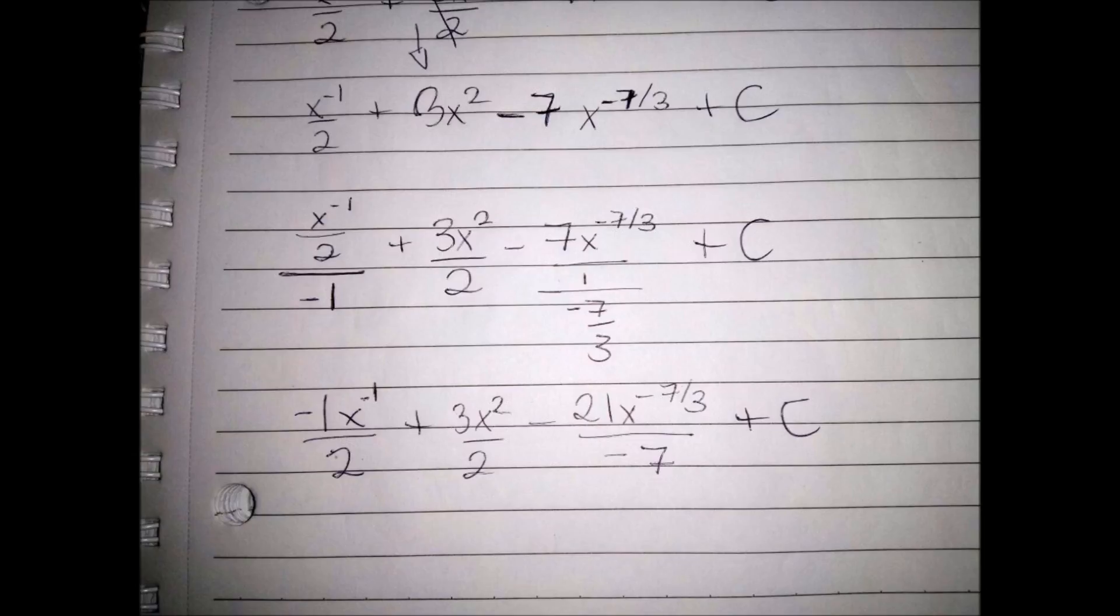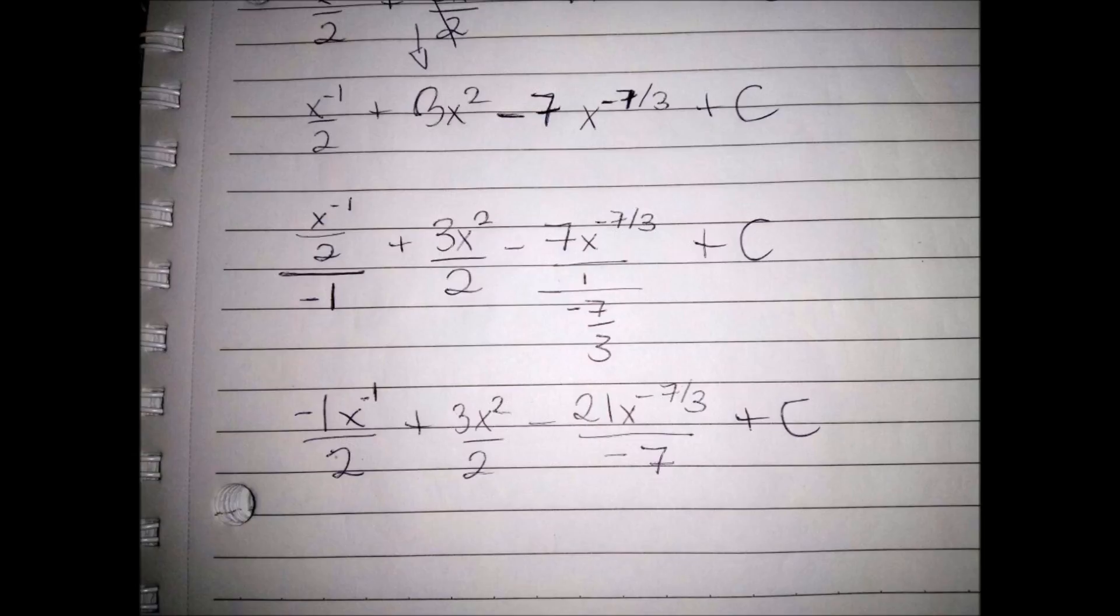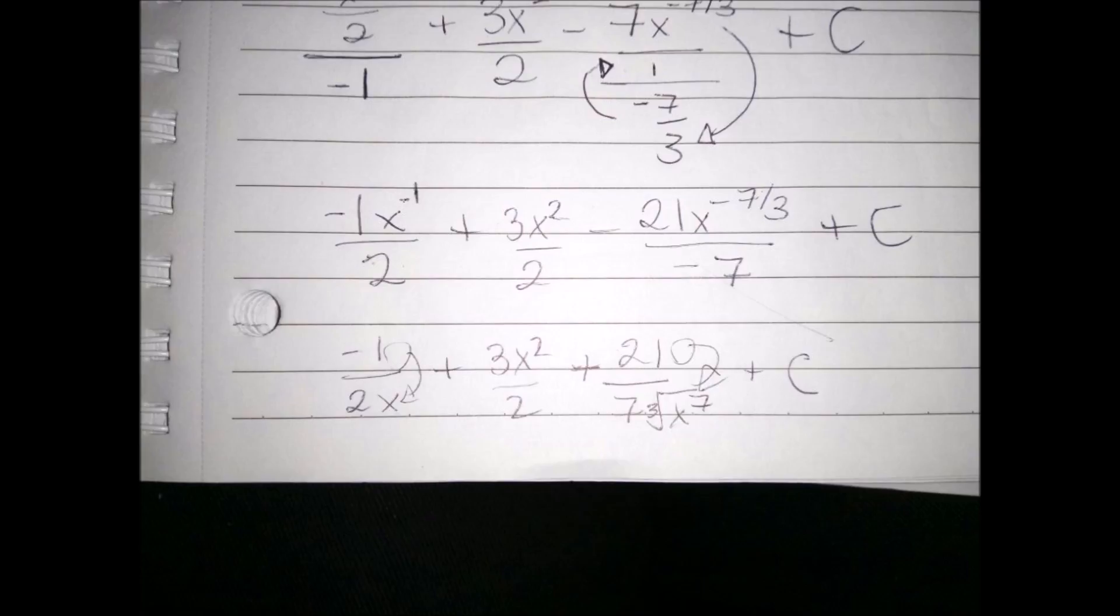As you can see, we have variables with negative exponents. To solve this, we simply send the variables to the other side of the fraction. Doing this will make the exponents positive.